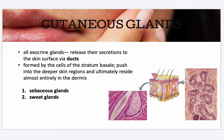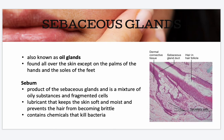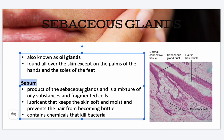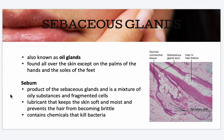You have your sebaceous glands — these are your oil glands found all over the skin, except on the palms and soles of the feet. Sebum is produced by the sebaceous glands and is a mixture of oily substances and fragmented cells. It is a lubricant that keeps the skin soft and moist, prevents hair from becoming brittle, and contains chemicals that kill bacteria.